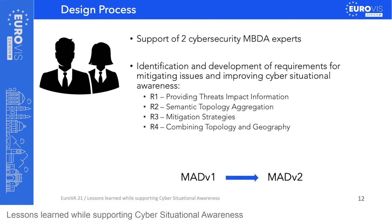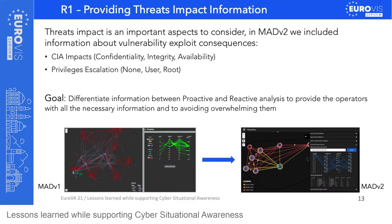Threats impact is an important aspect to improve situational awareness. Therefore, we added information about vulnerability exploit consequences regarding confidentiality, integrity, and availability impacts, as well as privilege escalation — meaning an exploit that allows gaining user or root privileges on a system. The goal of this requirement is to differentiate information between proactive and reactive analysis, providing operators with all necessary information without overwhelming them.